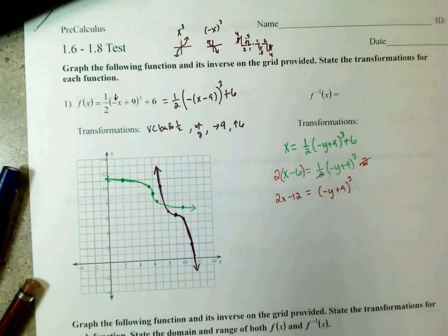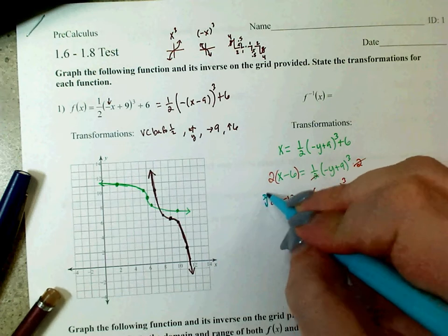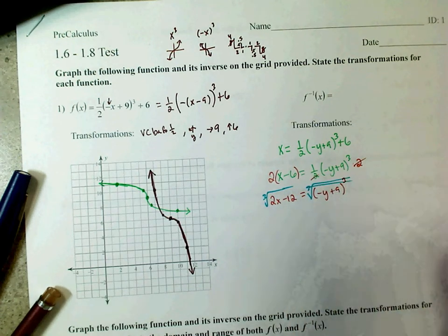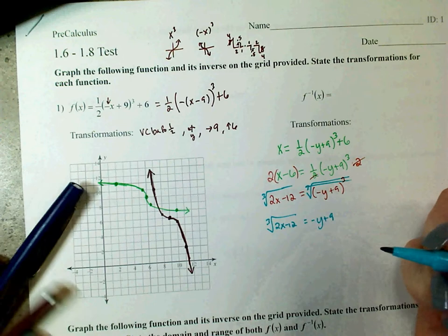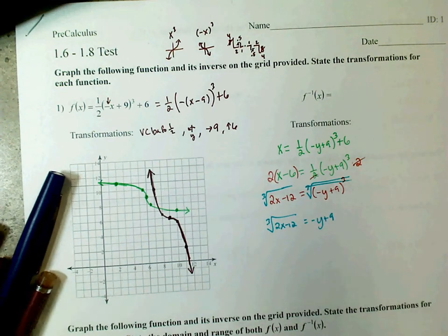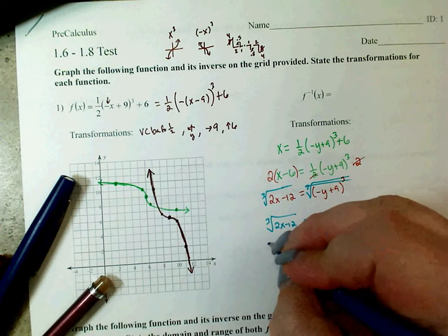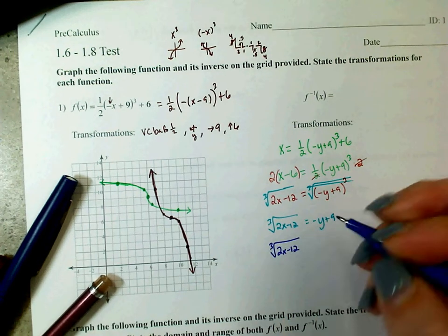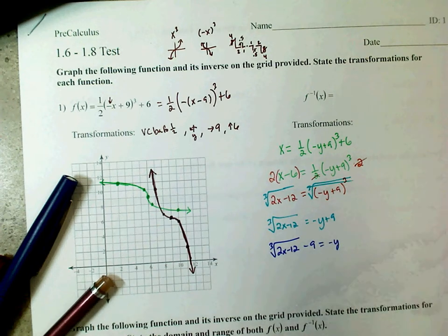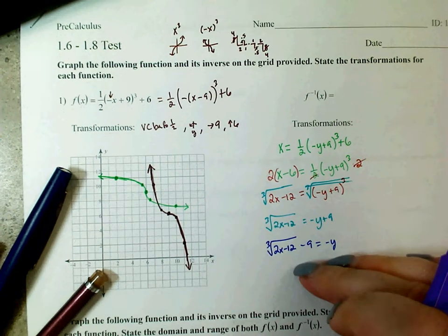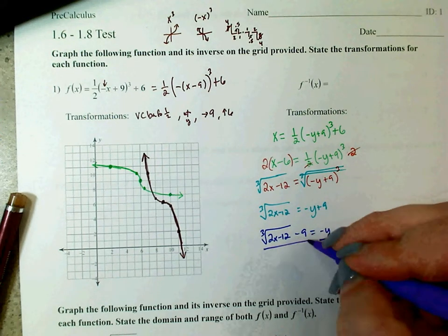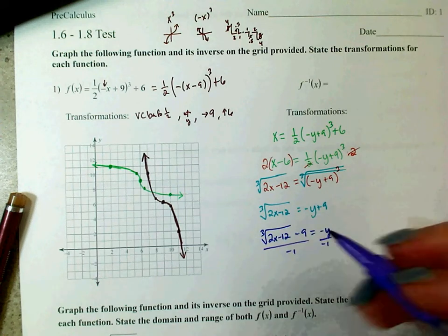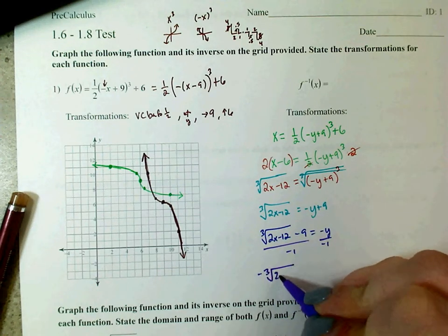The inverse of the power of 3 is the cube root, so we take the cube root of both sides. The cube root of (2x minus 12) equals negative y plus 9. Now subtract 9: the cube root of (2x minus 12) minus 9 equals negative y. A lot of people forgot about the negative. When you divide out the negative, think of it as changing the sign of everything. The cube root becomes a negative cube root, and the minus 9 becomes a positive 9.